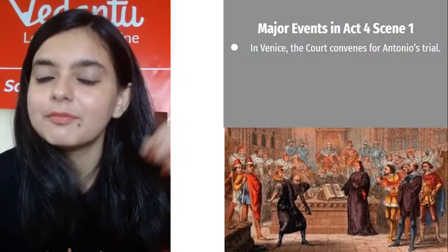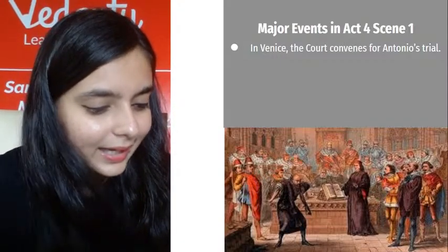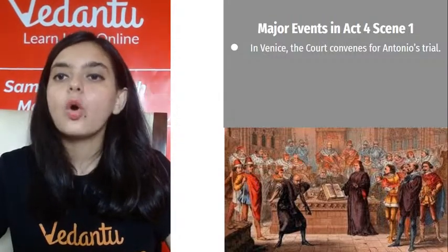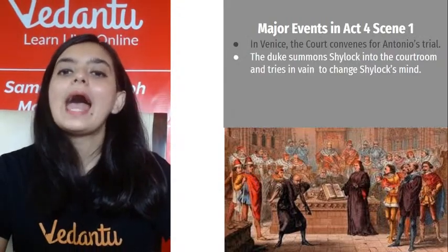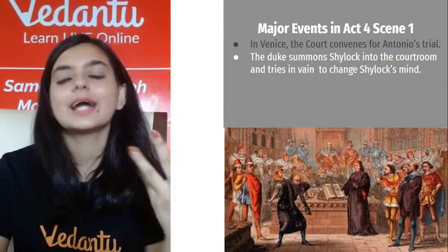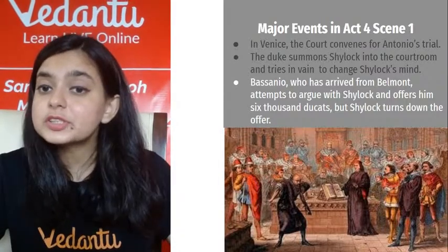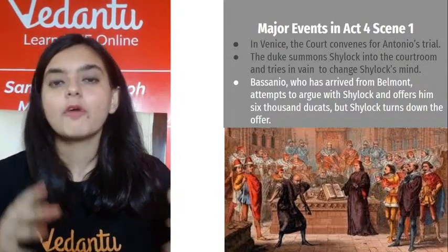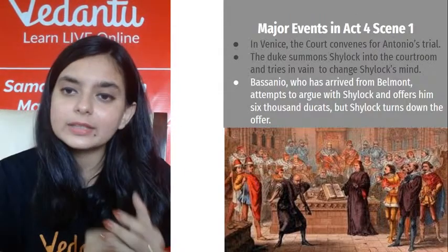Let's start off with the major events in Act Four. In Venice, the court convenes — Antonio is put on trial. The Duke summons Shylock and asks him to change his mind and show mercy on Antonio. Basanio, who has arrived from Belmont, attempts to argue with Shylock and offers him 6,000 ducats, but Shylock turns down the offer.